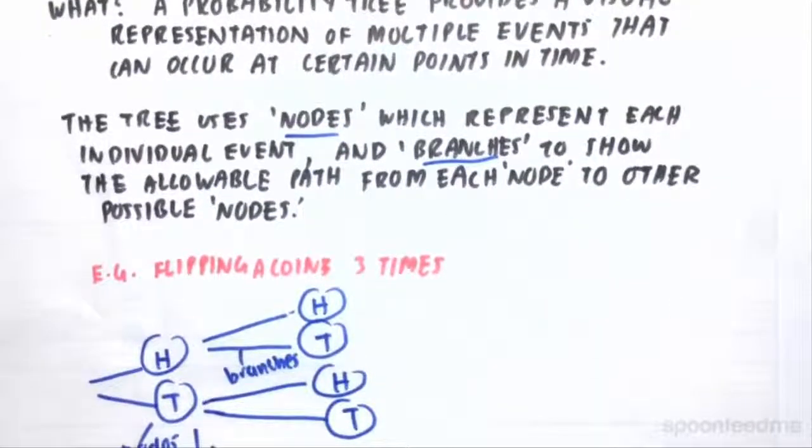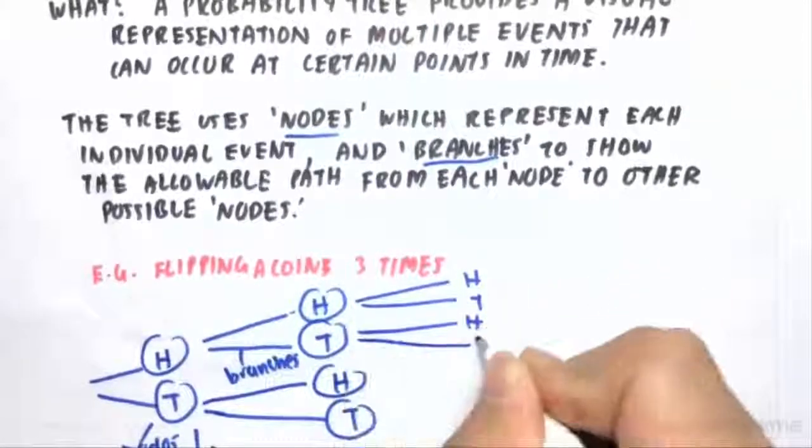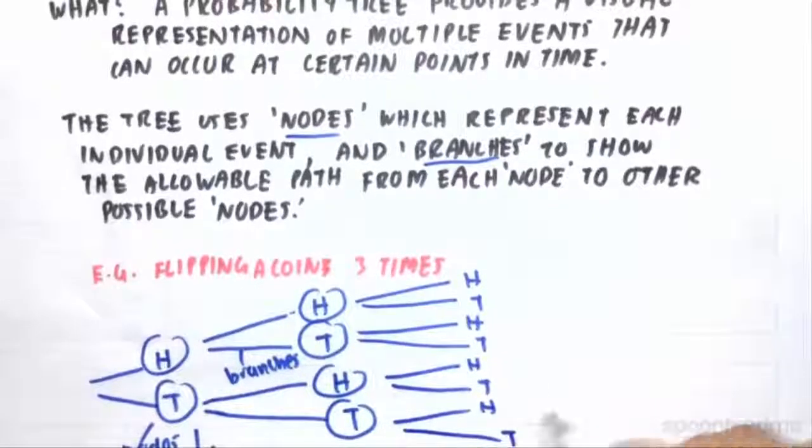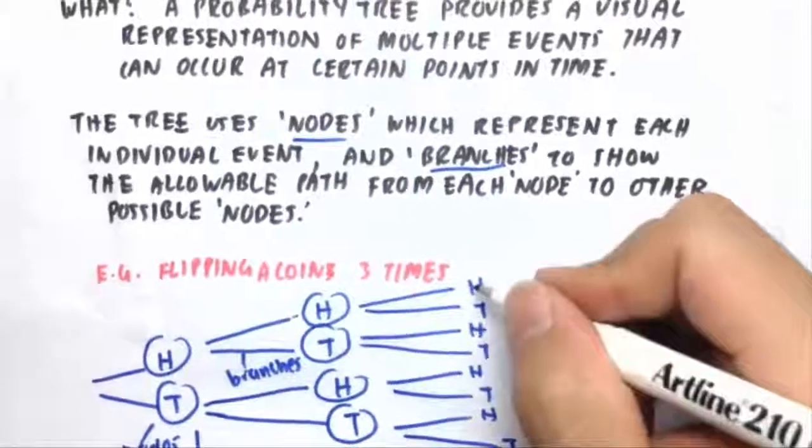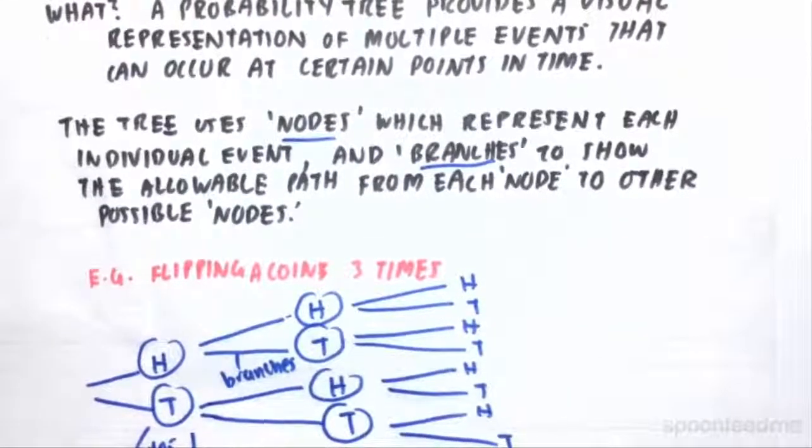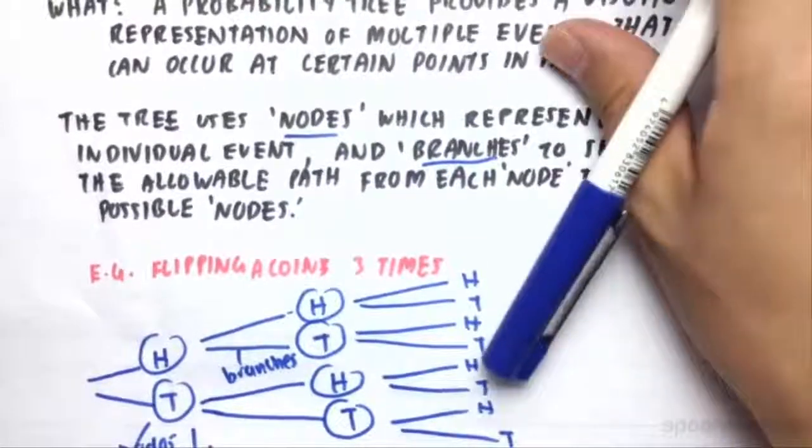So then if we flip a coin three times, we have a probability tree that looks something like this. Each one of these outcomes are our nodes and each one of these branches that show our allowable paths are branches to those nodes.